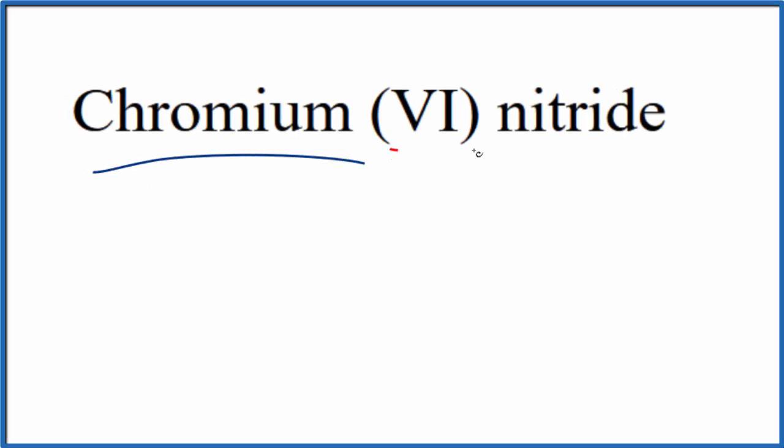To write the formula for chromium (VI) nitride, let's first write the element symbol for chromium. That's just Cr.